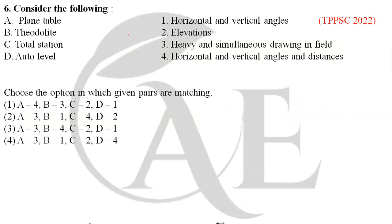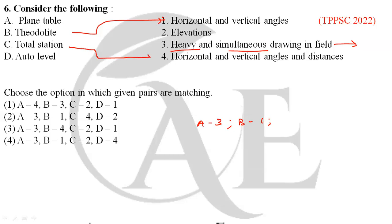Next question: match the instruments. Plane table — it is heavy and involves simultaneous drawing in the field, so A→3. Theodolite — used to find horizontal and vertical angles, so B→1. Total station — used to find horizontal and vertical angles as well as distances, so C→4. Auto level — used to find elevation, so D→2. The correct sequence is 3, 1, 4, 2, making option 2 the correct answer.